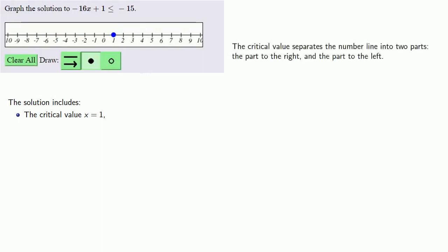The critical value separates the number line into two parts: the part to the right and the part to the left. We'll test a point in each part. To the right, we'll test x equals 1 million.